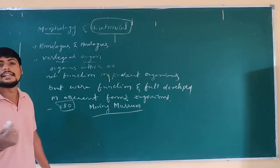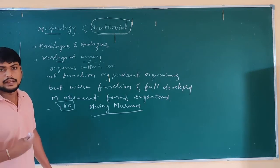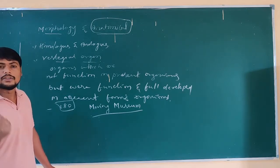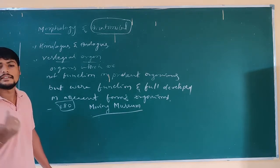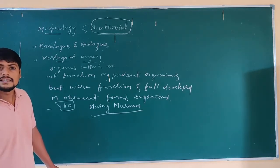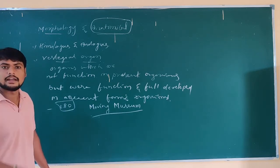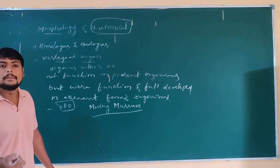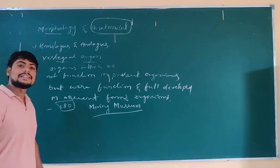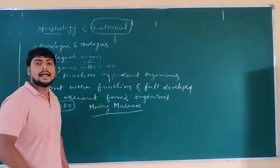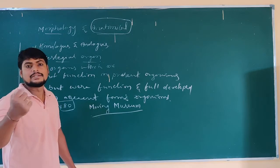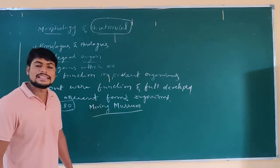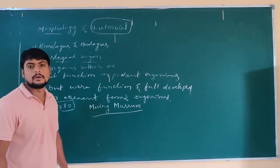Like the coccyx in the backbone, and also hairs on the skin — these are some of the vestigial organs we can identify. We also have vestigial organs we cannot easily count. We can also take the appendix as an example — it is one of the vestigial organs found in our body.